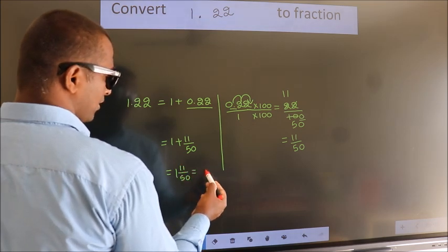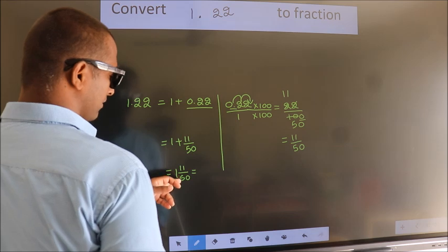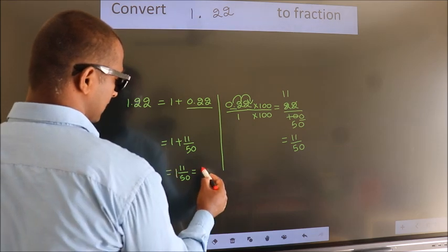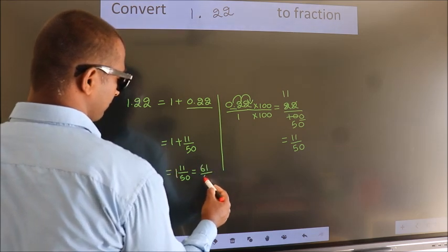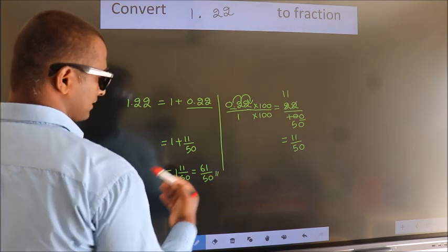And in improper fraction, it is 1 into 50, 50 plus 11, 61 by 50 is our fraction.